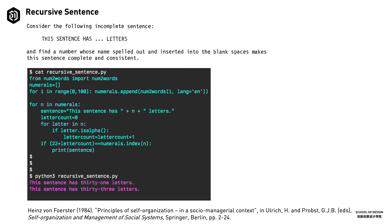The recursive sentence goes: 'This sentence has [dot dot dot] letters,' and this has an eigenvalue — a correct solution. In the English language it has two correct solutions, 31 and 33, assuming we take the hyphen as a letter. In different languages we get different solutions, but this converges on two correct solutions that can be described as its eigenform or eigenbehavior.